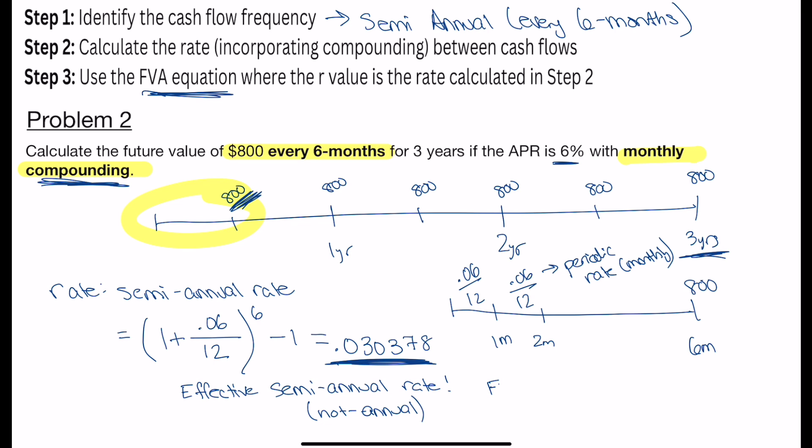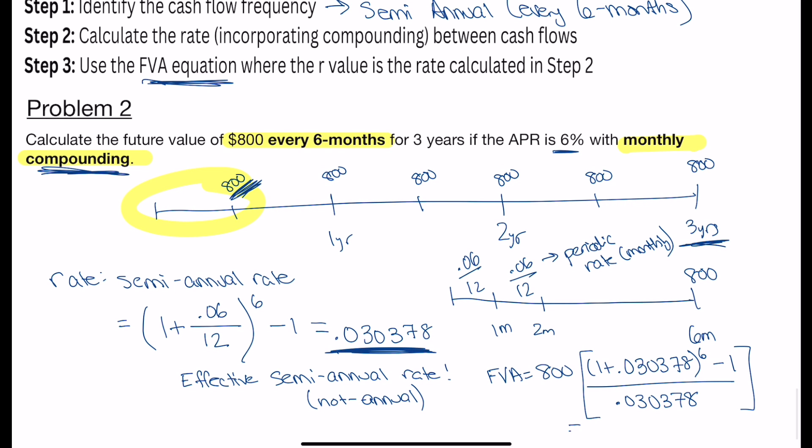I end up with the future value of this annuity is equal to 800. Then in brackets, I'm going to have 1 plus that effective rate I just calculated. Number of cash flows is 6 minus 1 divided by 0.030378. And my final answer ends up being 5179.64. And again, your final answer could differ slightly depending on how many decimal places you kept, especially in the R portion.